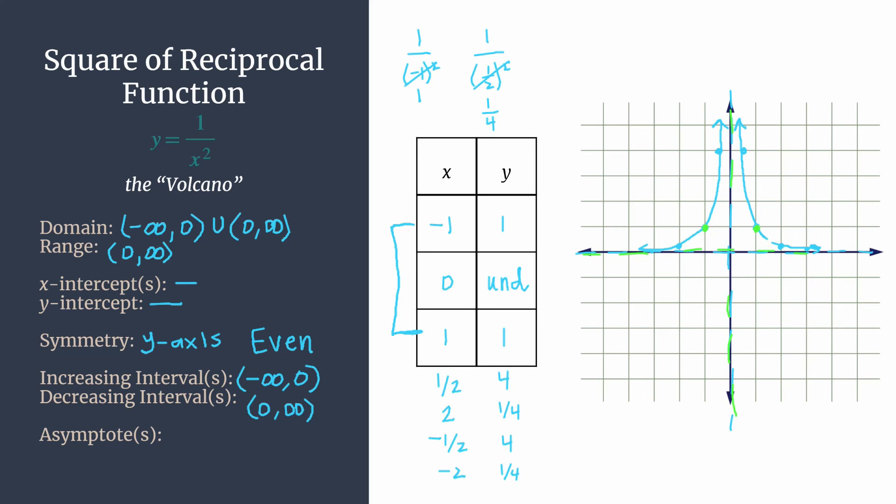All right. Finally, we have our asymptotes. So these asymptotes, our vertical one, x equals zero, our horizontal one, y equals zero. Those are the same as we had with the reciprocal. They help guide our graph.